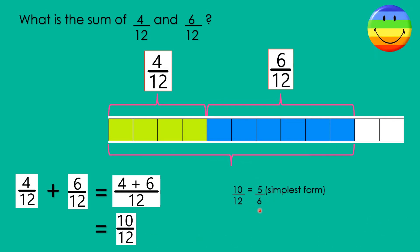Now, you are going to simplify it or make it into the simplest form. And, the simplest form of 10 twelfths is 5 sixths. Do you get it? Good!